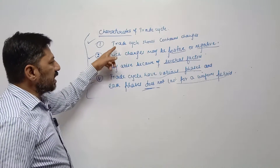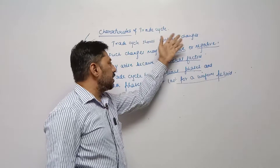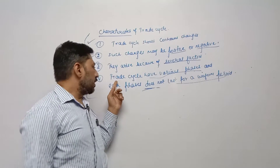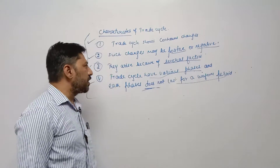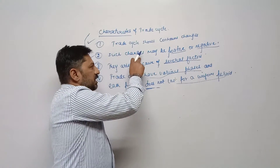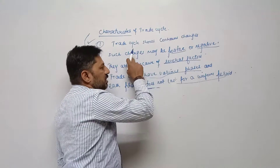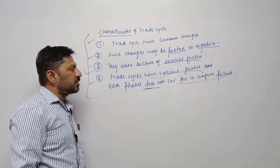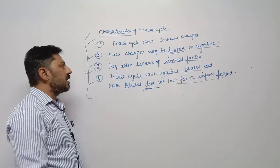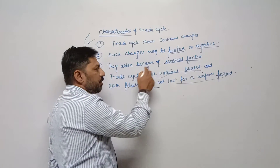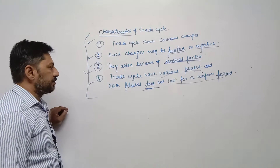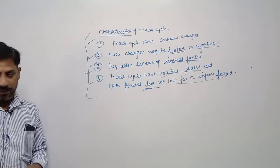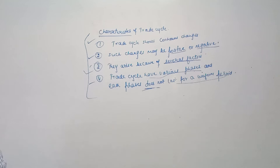Once again: trade cycle is a continuous process. Trade cycle have various phases and each phase does not remain for a longer period. Such changes may be positive or negative — prosperity period or depression period. These changes arise because of several factors, which may be internal or external factors. These are the characteristics of trade cycle. Last topic: phases of trade cycle.